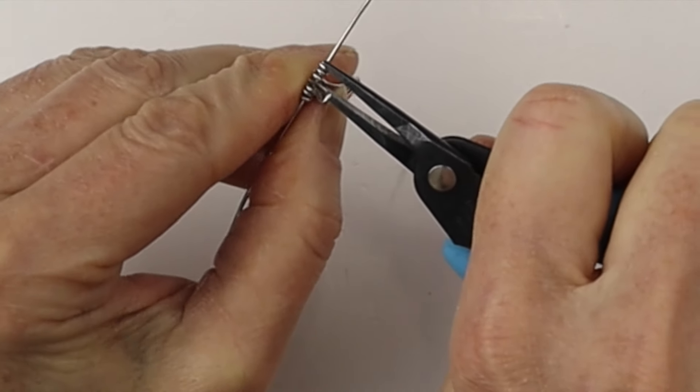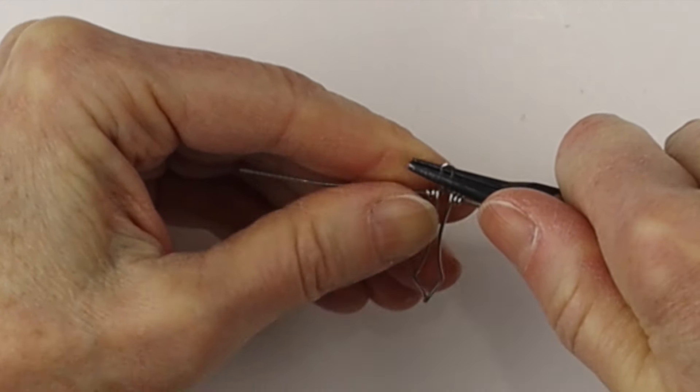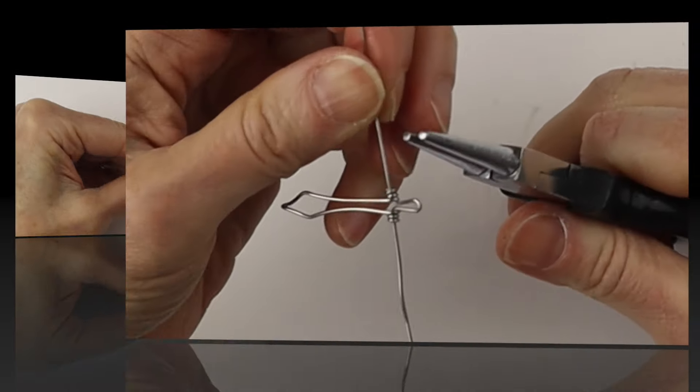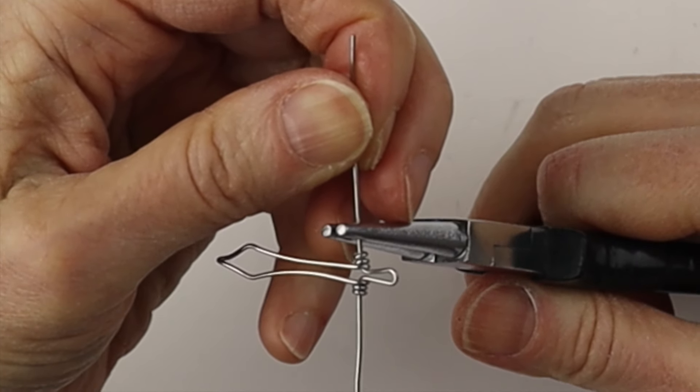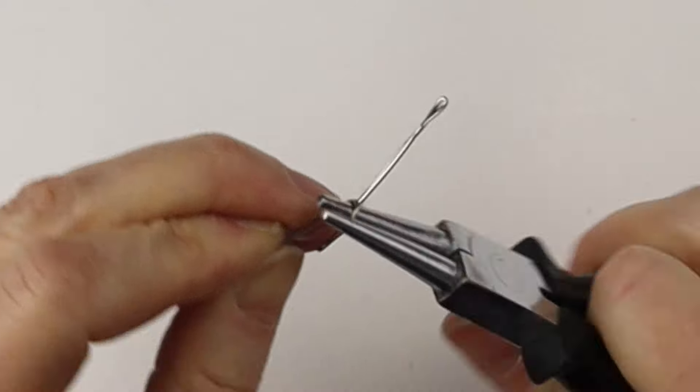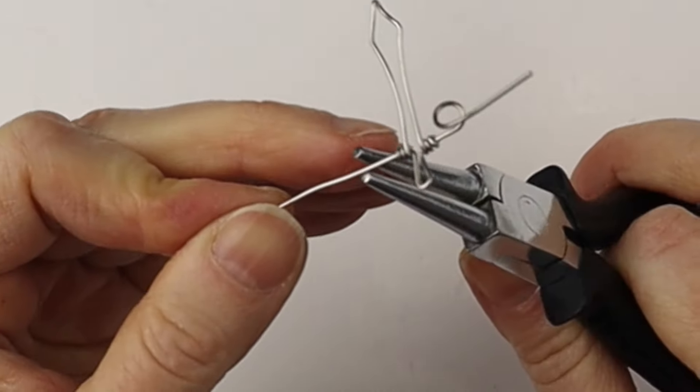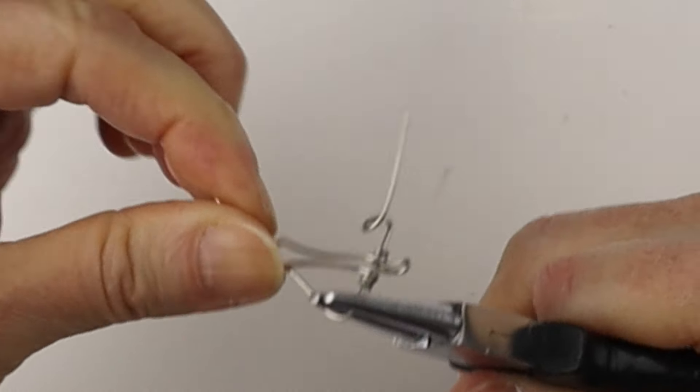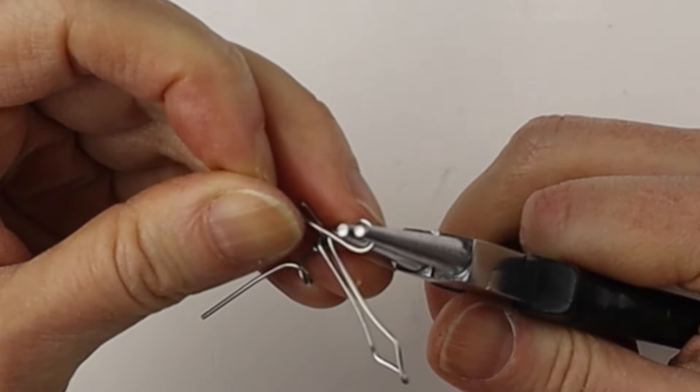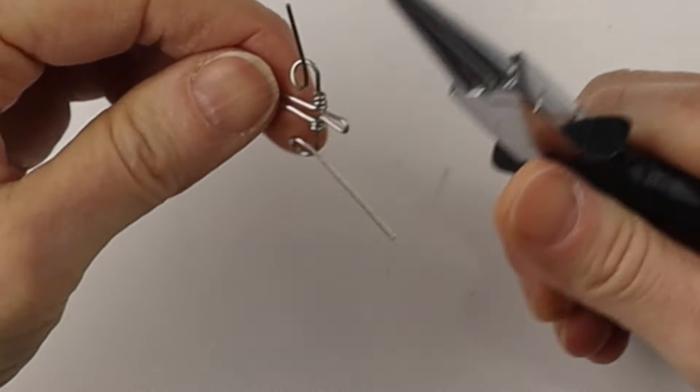So there we have the base part. And then we are going to curve out the handle to make it look a little more fancy. So getting our larger round nose pliers, we are going to make a couple of little loops on either side. You can measure them to make sure they're at the same distance.